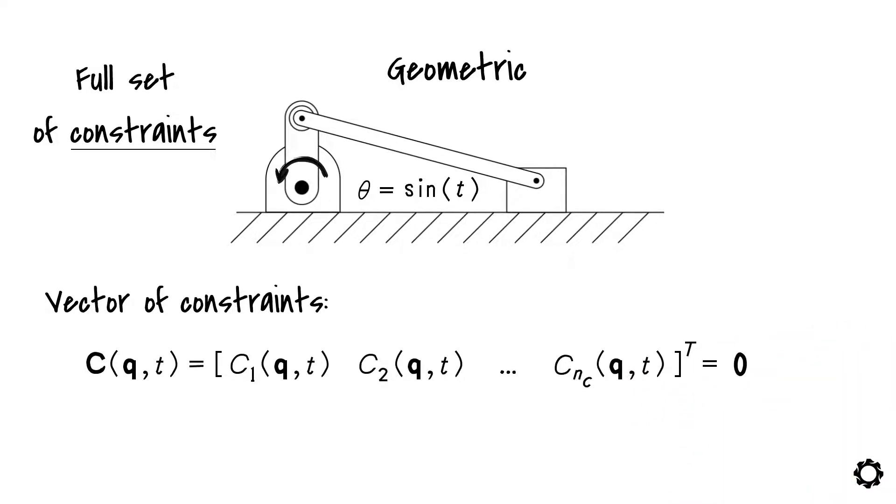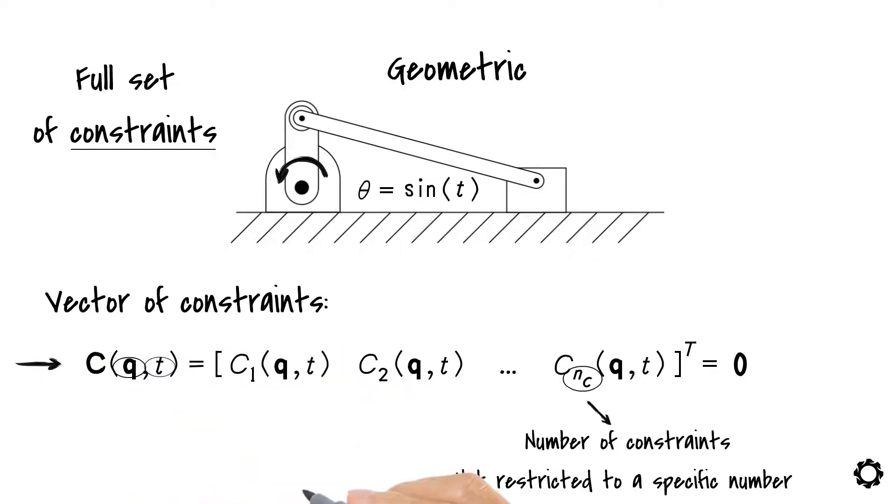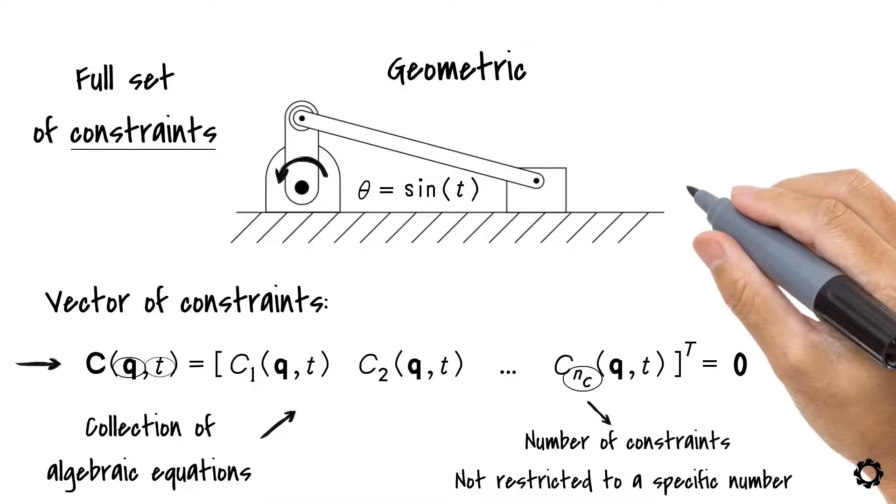In the vector of constraints, you see that we have nc constraints. This simply means that we could have any number of constraints and it is not restricted to a specific number. We also see from these equations that our constraints might depend on the generalized coordinates q and time. Even more, we also see that this vector represents a collection of algebraic equations, most likely non-linear.